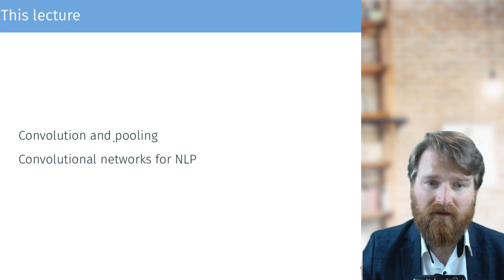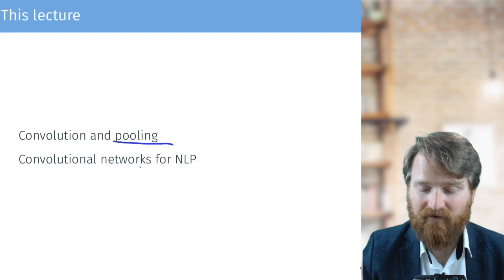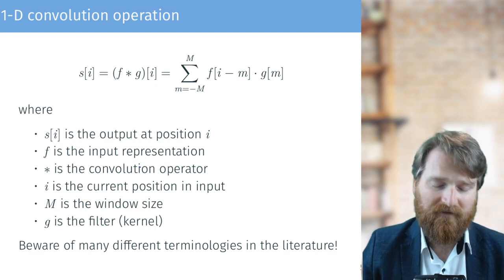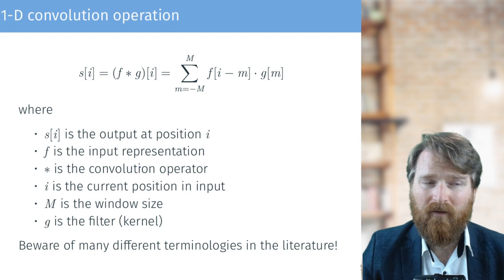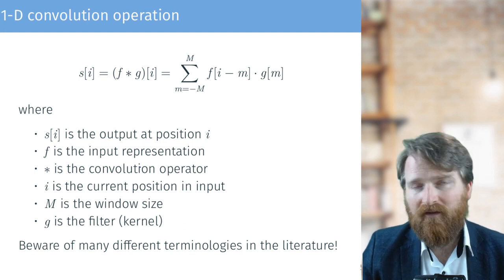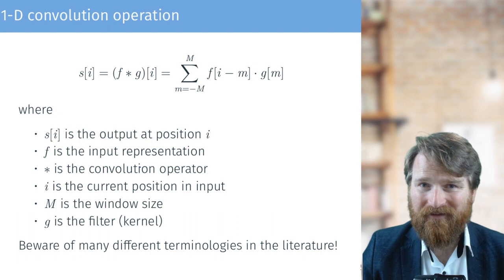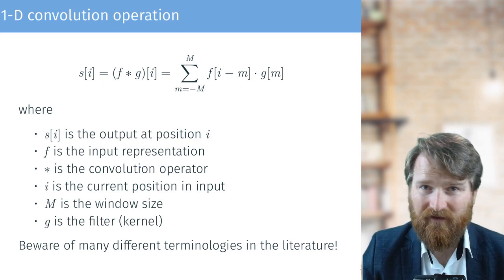Today we'll talk about convolution and pooling — a special operation used in convolutional neural networks — and then examine the details of what makes them work well for NLP. Convolution is an operation known in signal processing and is heavily used in computer vision, which makes the terminology a little different from what we use in NLP. There's an abundance of different terminologies, so always make sure you know what the letters mean in a given context.